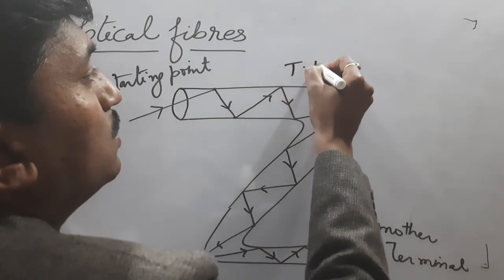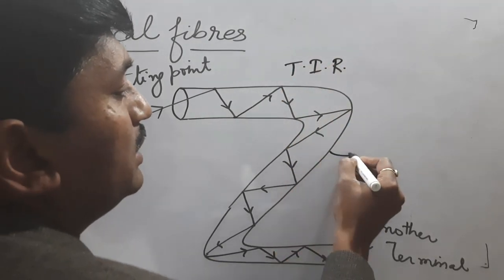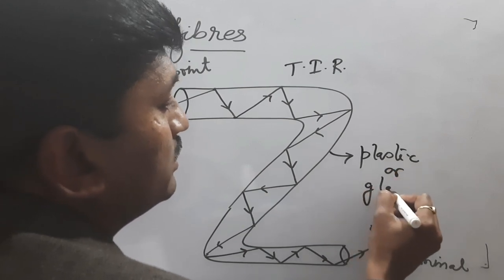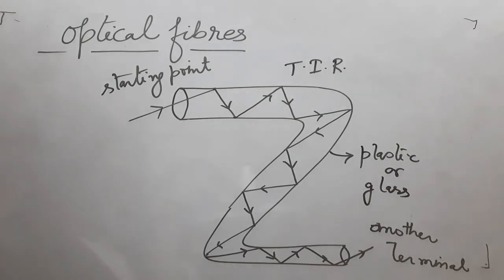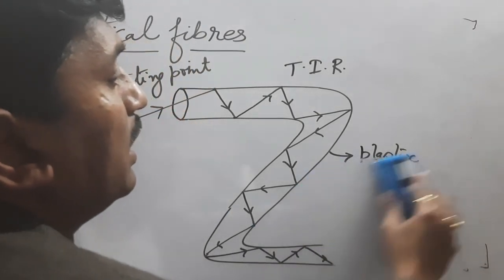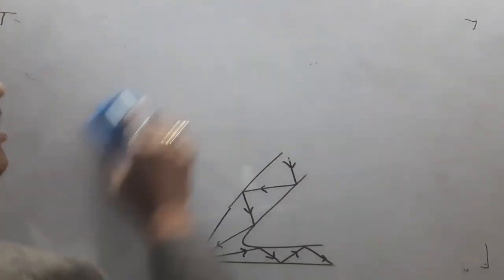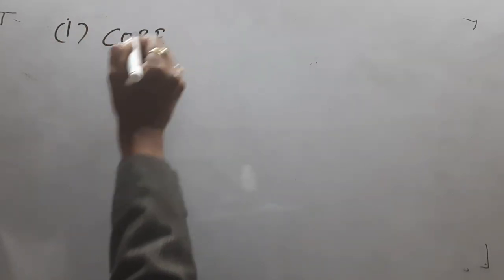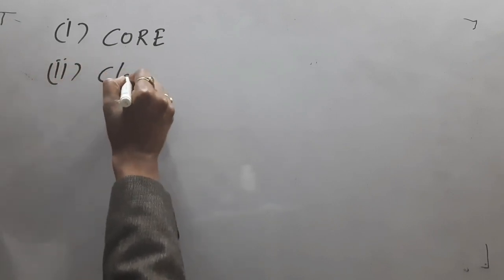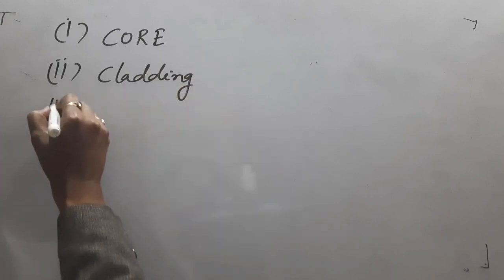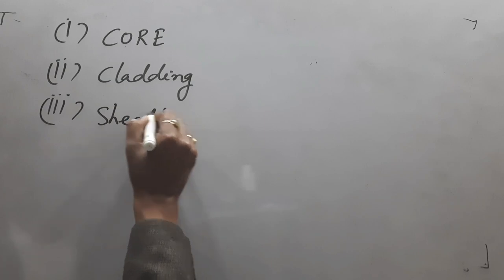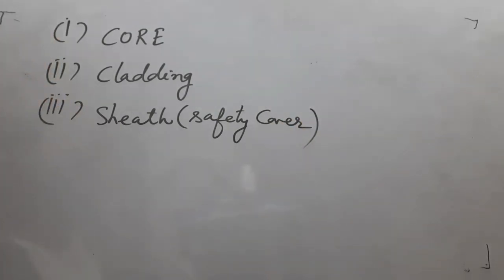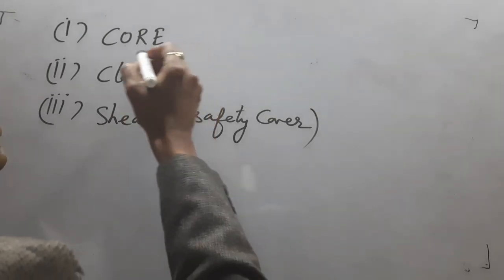Light passes from one terminal to another terminal by the help of total internal reflection. The fiber may be made by plastic or glass. The main components of fiber are: number one, core; number two, cladding; and number three, sheet — also known as safety cover. These are the three main parts of the fiber cable.